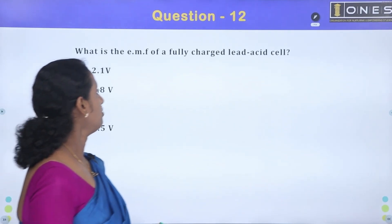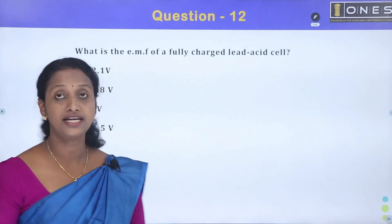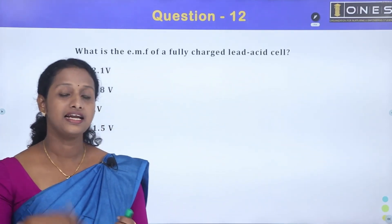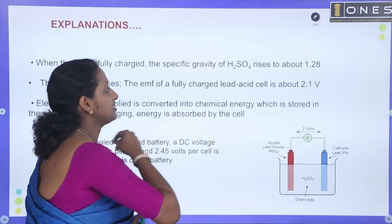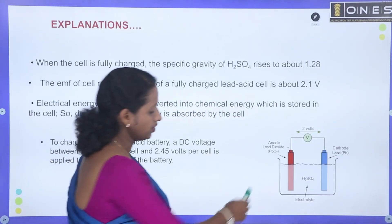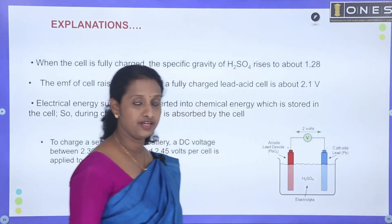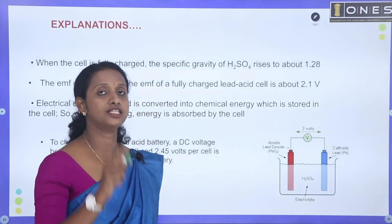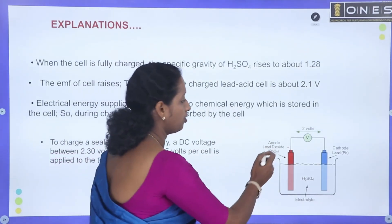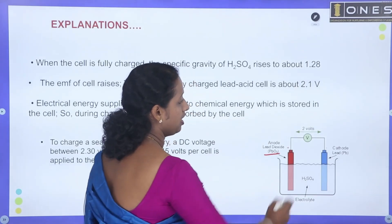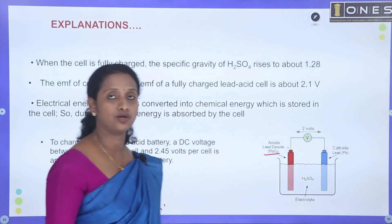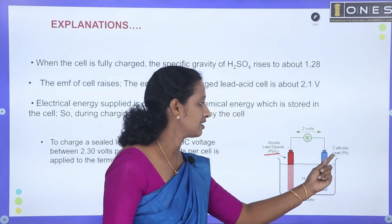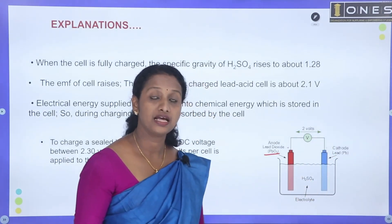What is the EMF of a fully charged lead-acid cell? Lead-acid cell. The lead-acid cell has a negative electrode — that is cathode — coated with lead.